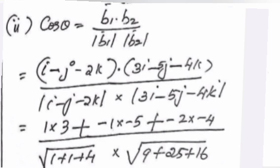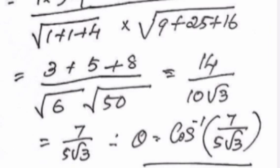Find the angle between the lines. Answer: cos θ = (b₁ · b₂)/(|b₁||b₂|) = (i − j − 2k) · (3i − 5j − 4k) / (|i − j − 2k| × |3i − 5j − 4k|) = (3 + 5 + 8) / (√6 × √50) = 16 / (10√3) = 14/(10√3) = 7/(5√3).